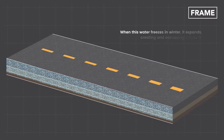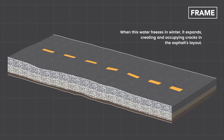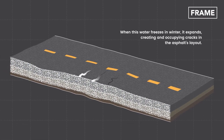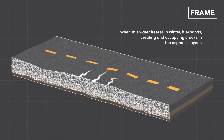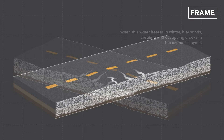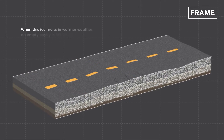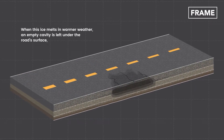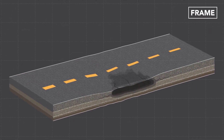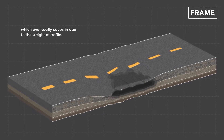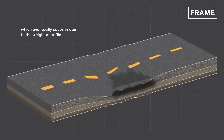When this water freezes in winter, it expands, creating and occupying cracks in the asphalt's layout. When this ice melts or evaporates in warmer weather, an empty cavity is left under the road's surface, which eventually caves in due to the weight of traffic.